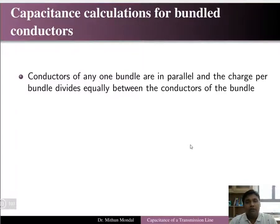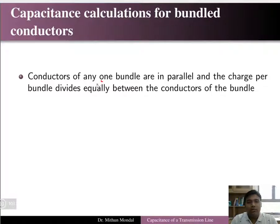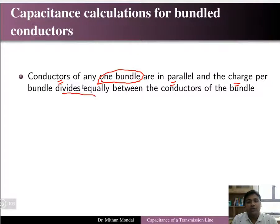We have already seen that when you have bundle conductors, the conductors in one bundle are in parallel and the charge per bundle divides equally between the conductors of the bundle. Bundle conductors can be formed by having two, three, or four conductors. All the conductors in a particular phase of a bundle are in parallel and the charge on the bundle divides equally.